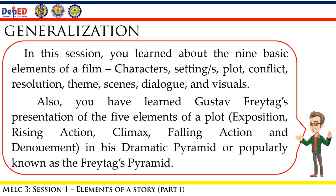To sum it up, in this session you have learned about the nine basic elements of film: characters, setting, plot, conflict, resolution, theme, scenes, dialogue, and visuals. You have also learned Gustav Freytag's presentation of the five elements of the plot — exposition, rising action, climax, falling action, and denouement — in his dramatic pyramid, popularly known as the Freytag's Pyramid.